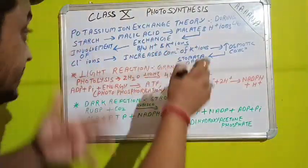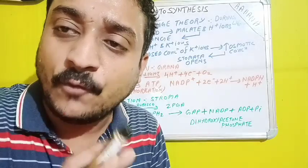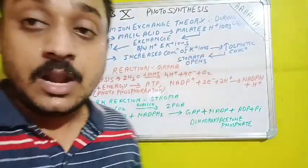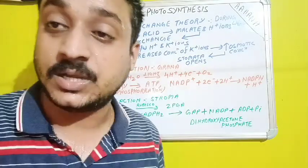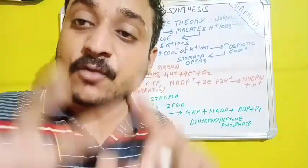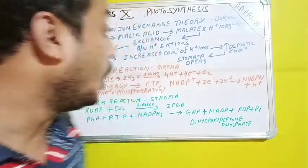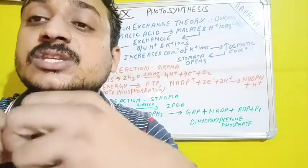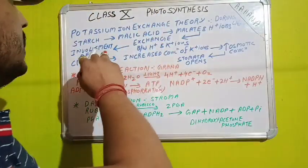As more and more K⁺ ions enter, the concentration of K⁺ increases slightly, causing a fluctuation in osmotic concentration. This fluctuation allows more and more water to flow into the guard cell. When more water flows in, the guard cell becomes turgid and the stomata open. That is the concept behind the K⁺ ion exchange theory.